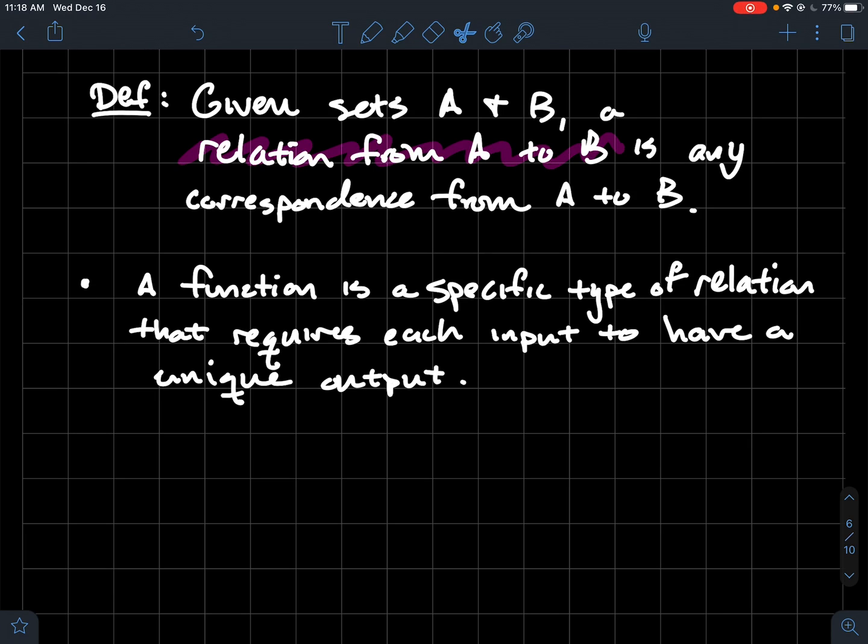Now if we try to relate this to what we've been doing, a function is a specific type of relation and what do we do when we've got a function? We require that each input has a unique output. Functions are specific types of relations.